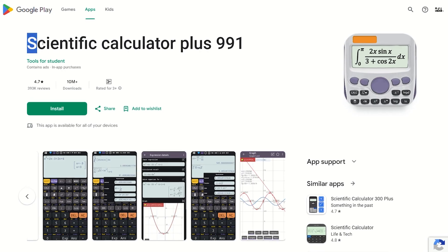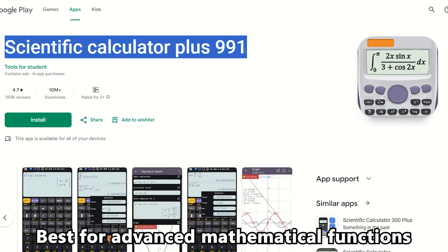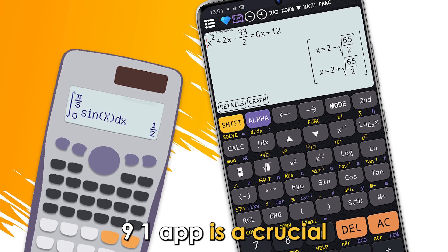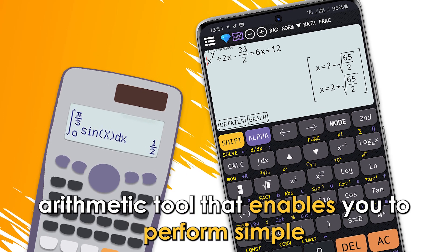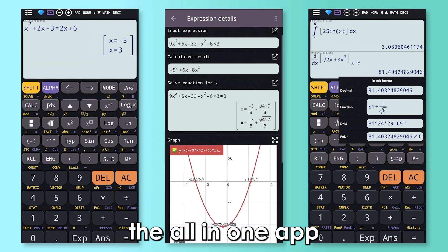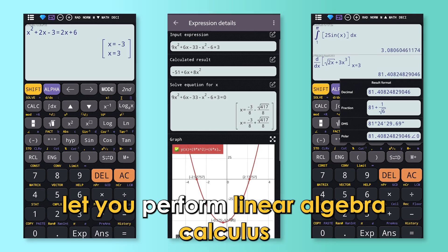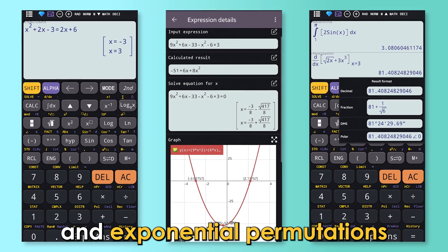Scientific Calculator Plus 991 App, Best for Advanced Mathematical Functions. The Scientific Calculator Plus 991 App is a crucial arithmetic tool that enables you to perform simple to complex mathematical operations. The all-in-one app lets you perform linear algebra, calculus, complex numbers, logarithms, and exponential permutations.